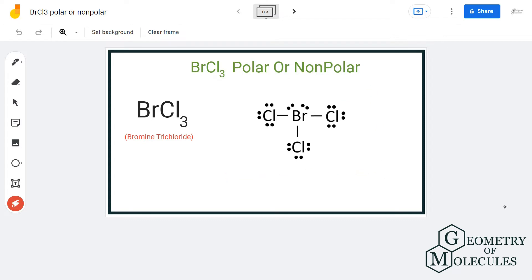So this is the Lewis structure of BrCl3 in which bromine is forming three single bonds with chlorine atoms, but it also has two lone pairs of electrons. Generally, molecules that have central atoms with two or with lone pairs are polar in nature.